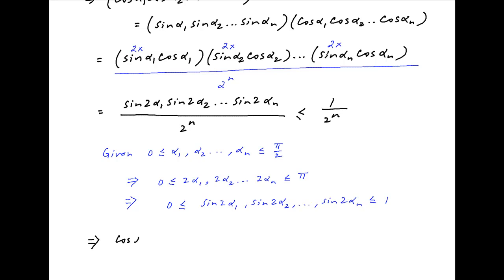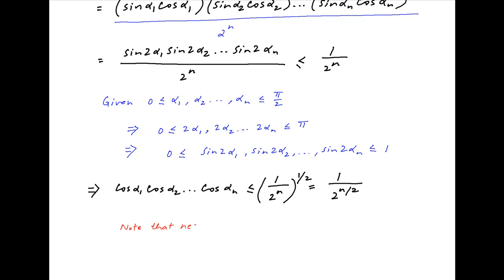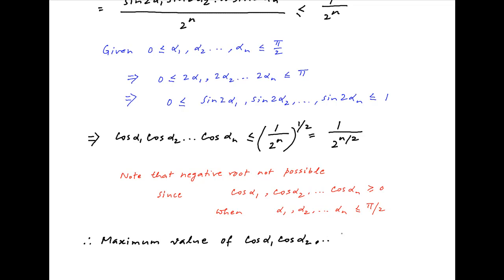Taking the square root, we get the result: cos(α₁) · cos(α₂) · ... · cos(αₙ) ≤ √(1/2^n), which equals 1/2^(n/2). Notice that when we took the square root, we ignored the negative root because α₁, α₂, ... , αₙ are all less than π/2, so all cosines are positive. Therefore, the maximum value of cos(α₁) · cos(α₂) · ... · cos(αₙ) is 1/2^(n/2), which is the required result.